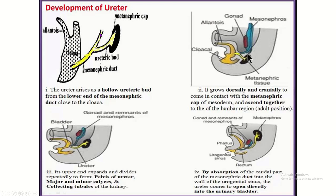Development of the ureter: the mesonephric duct arises from the intermediate mesoderm, which is part of the intraembryonic mesoderm. From this mesonephric duct, the ureteric bud appears. The ureteric bud ascends and meets the metanephric blastema of the kidney. Therefore, the ureter is developed from the ureteric bud, which is derived from the mesonephric duct. Later, the caudal part of the mesonephric duct is absorbed and the lower part of the ureter opens directly into the urinary bladder.